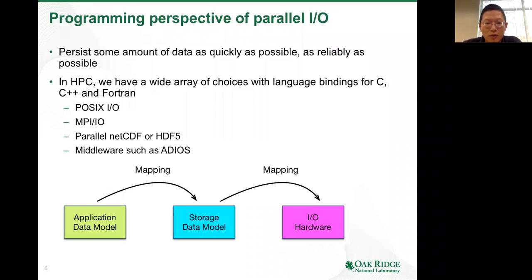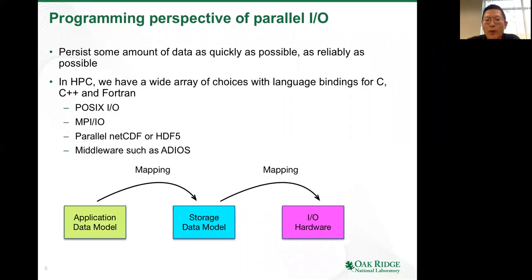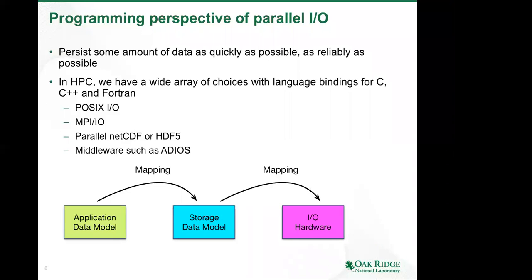Moving on to the programming perspective of parallel IO. The task at hand is to persist some amount of data as quickly and as reliably as possible. In HPC, we have many choices — it can be as simple as plain POSIX IO, MPI-IO, or parallel NetCDF and HDF5. I don't have detailed programming scripts to illustrate all of these choices, but I've provided reference links at the end of the talk that have more thorough tutorials and documentation.